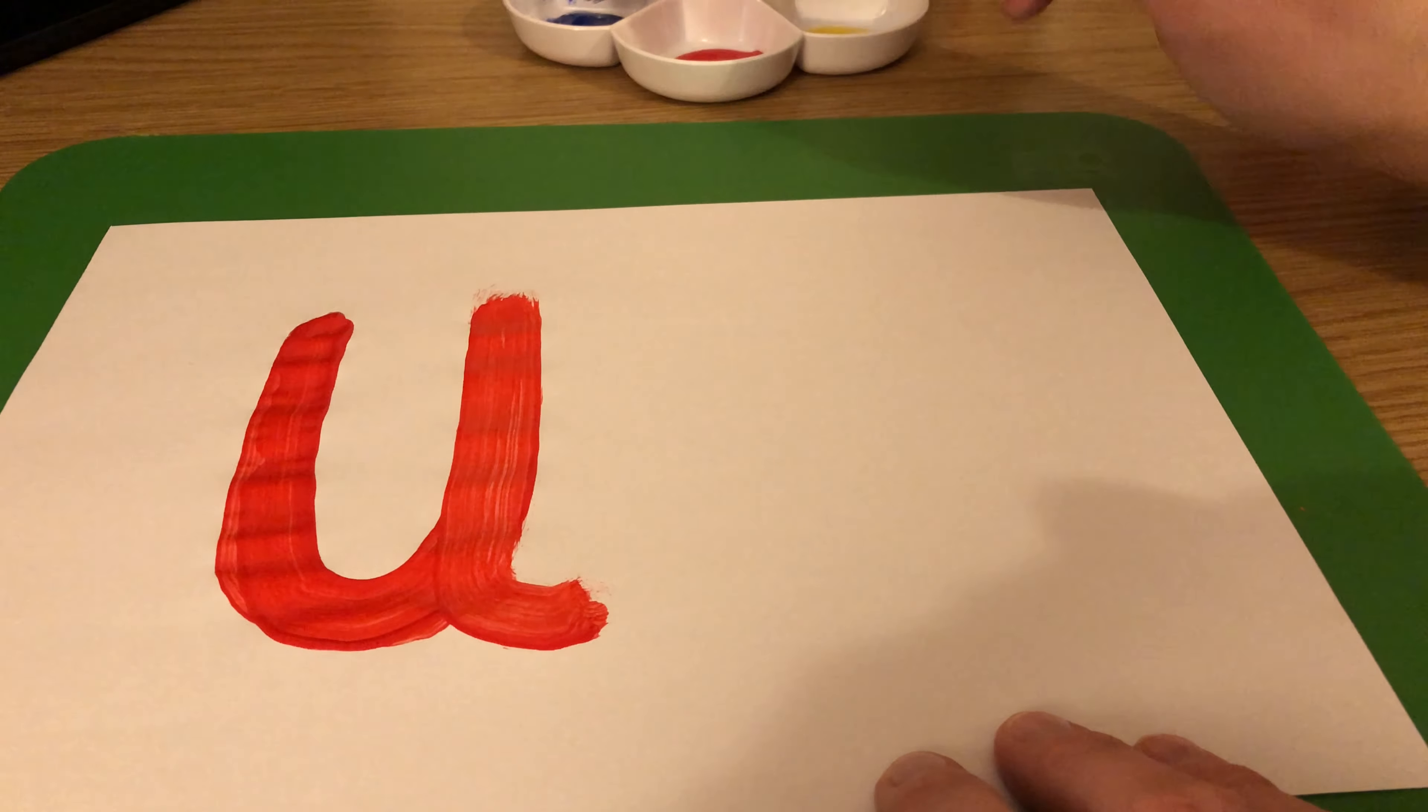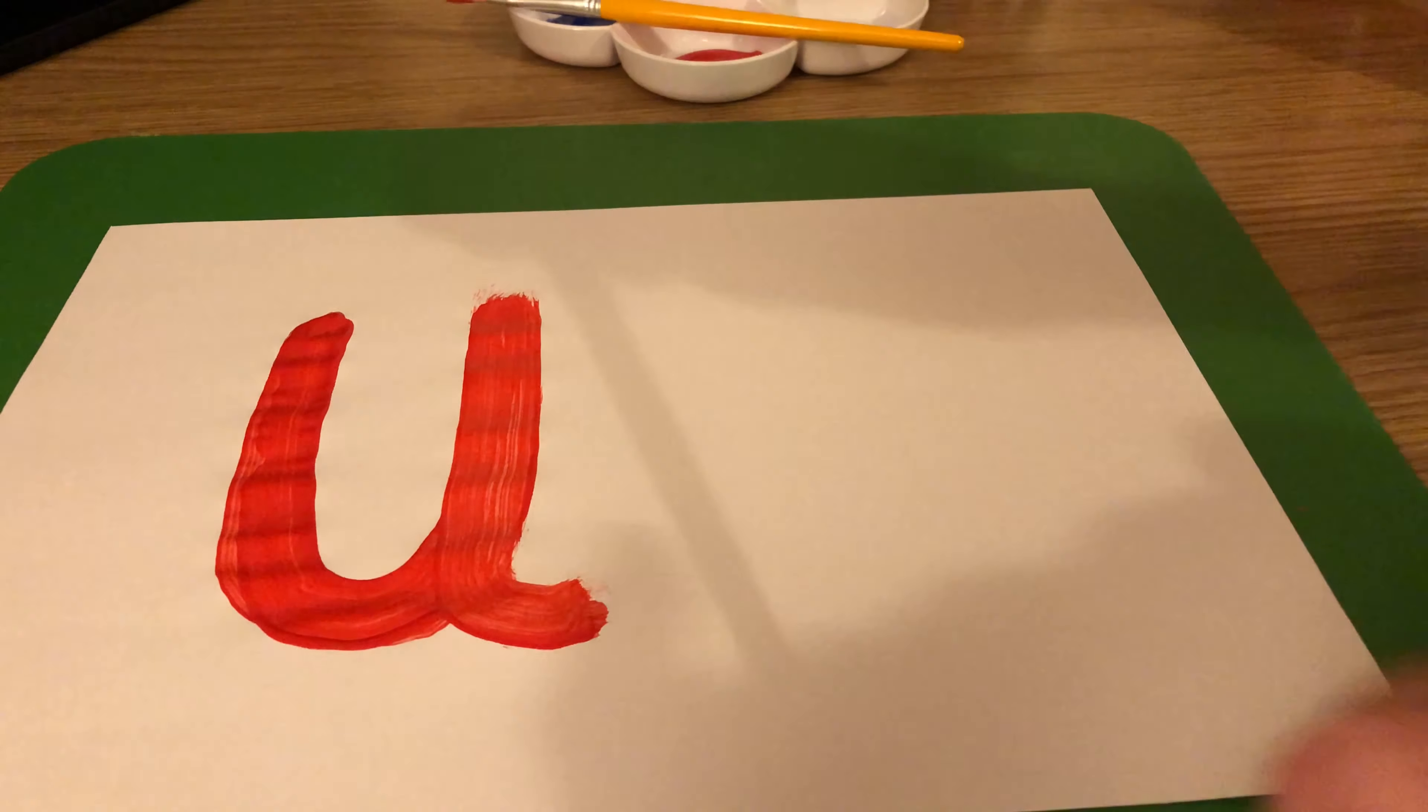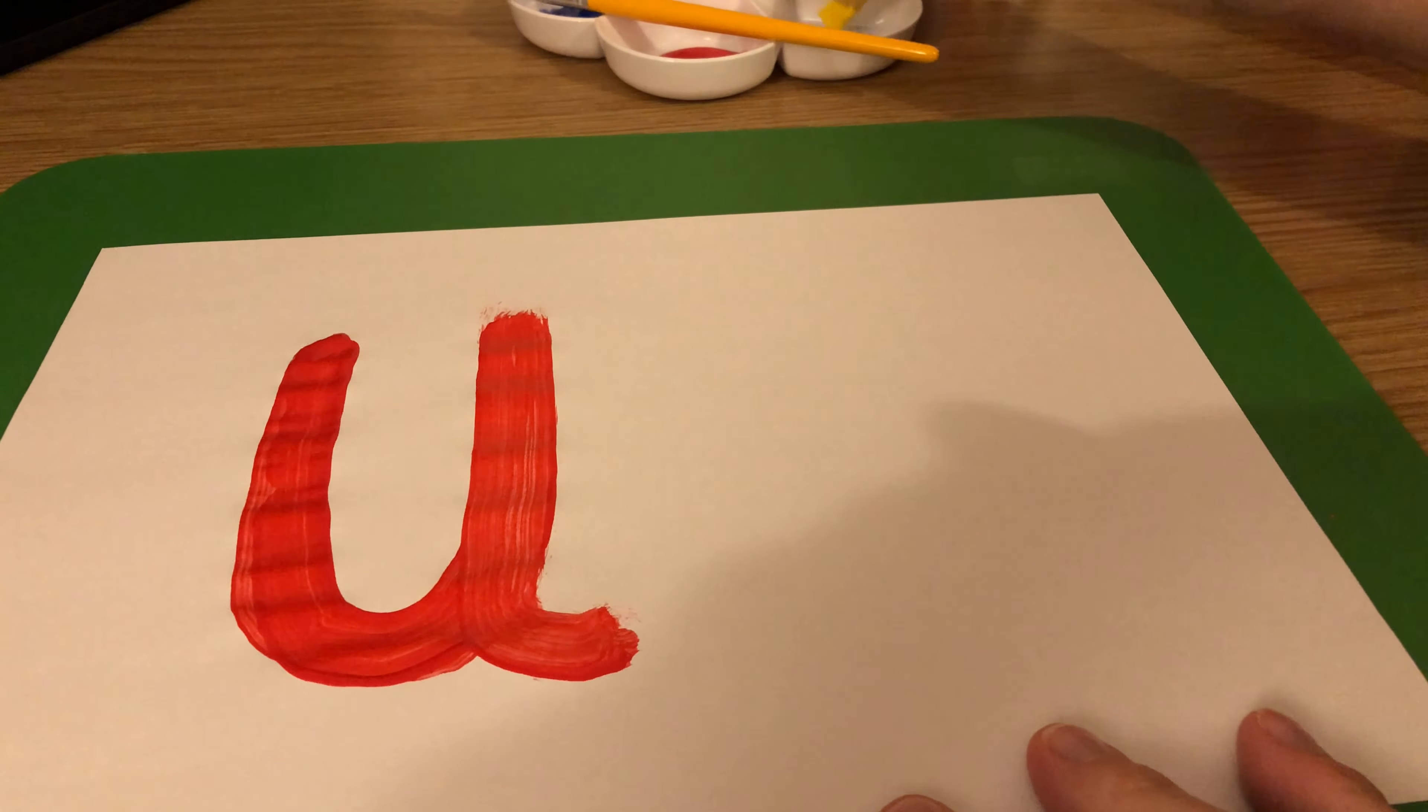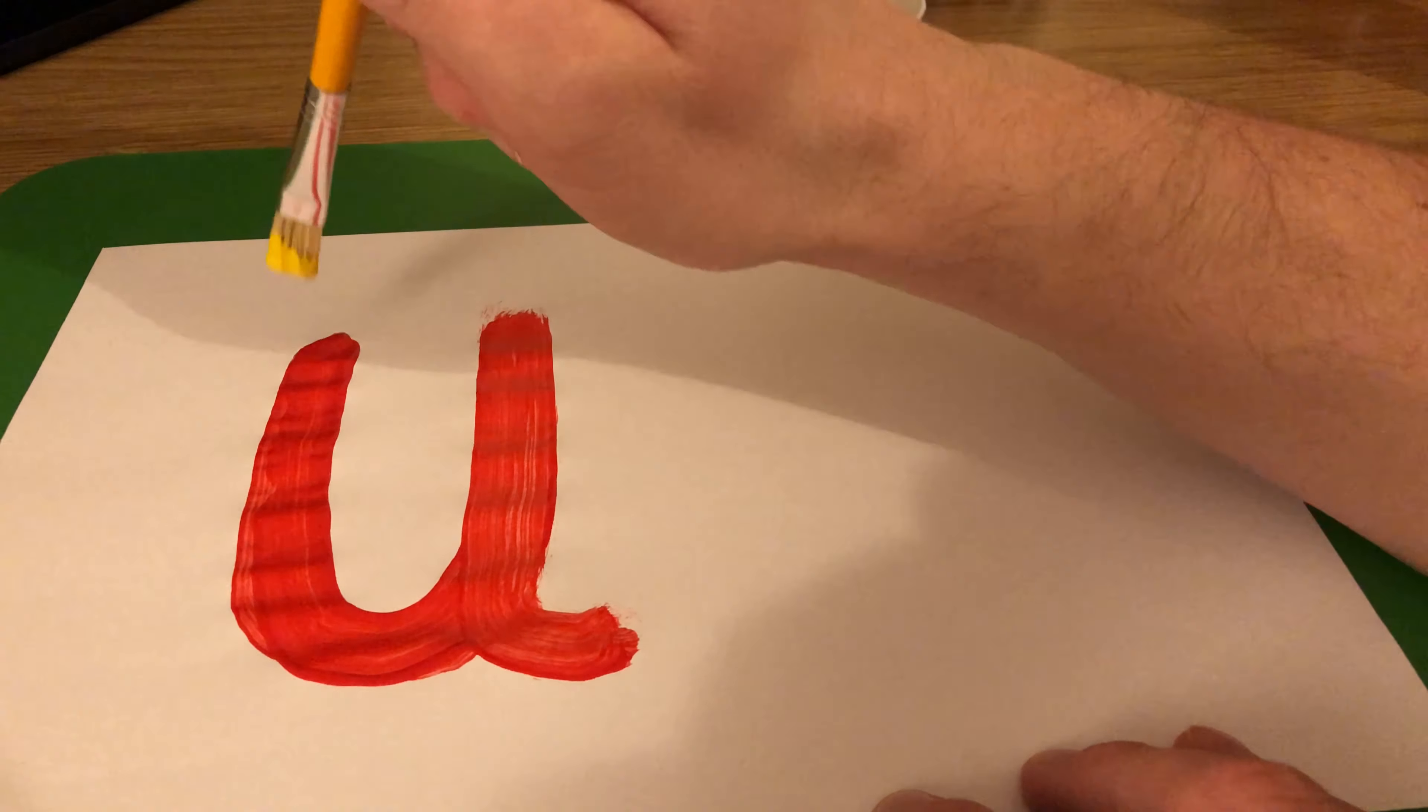Actually, that looks clear, doesn't it? Now I'm going to go right over the top of it again, but this time I'm going to use yellow. So what color should this turn into? I'm going to try and get some more paint. So what should red and yellow make? Let's find out.